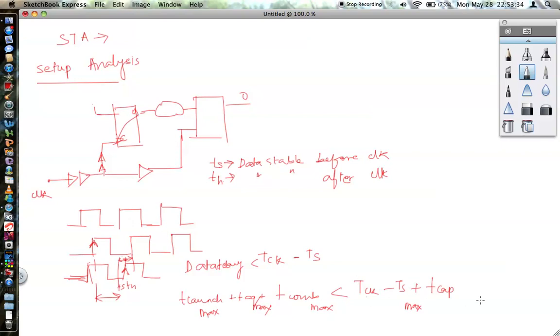And you have a lesser required arrival time. And this is called the actual arrival time. So if you can meet this, you can be rest assured that your circuit will meet timing.